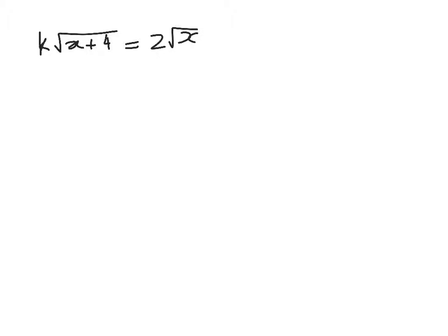We've got k√(x+4) = 2√x and we need to solve that for x. So first thing we're going to do is square both sides. We get k²(x+4) = 4x.